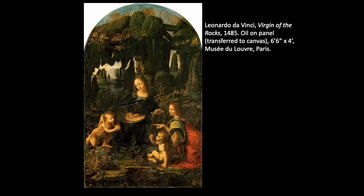In April 1483, Da Vinci contracted with the Confraternity of the Immaculate Conception to paint an altarpiece for their chapel in the church of San Francesco Grande in Milan. The painting is now known as the Virgin of the Rocks, and this is actually one of two existing versions today. This composition is complex, yet unified. He depicts the virgin and child with angels and incorporates a young John the Baptist to balance the composition and creates a stable, triangular, figural arrangement.